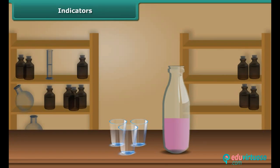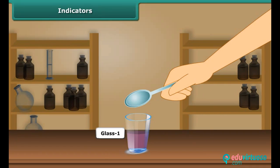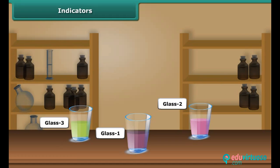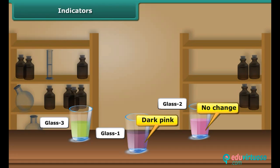Take a small amount of this indicator in three small glasses. Pour lemon juice in the first glass, water in the second glass, and soap solution in the third glass. You can notice that in glass one the color changes to dark pink — lemon juice is acidic in nature. There is no color change in glass two because water is neutral in nature.